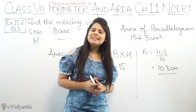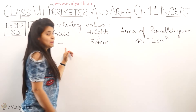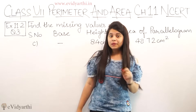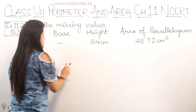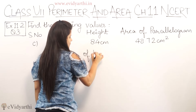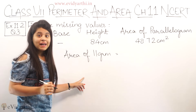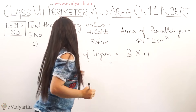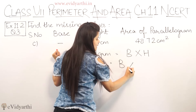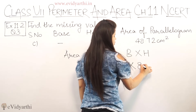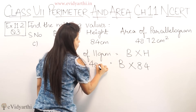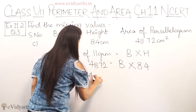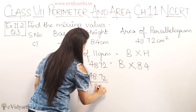So this was part B. Now let's come to the next part, part C. In part C, base is not given. Height is given as 8.4 centimeter, and area of parallelogram is 48.72 centimeter square. So again same thing: write area of parallelogram equals to base multiplied by height. Base is not given so we write b, multiplied by height 8.4. Area given is 48.72. To find base, height will divide over: so base equals 48.72 upon 8.4.